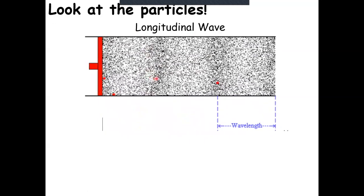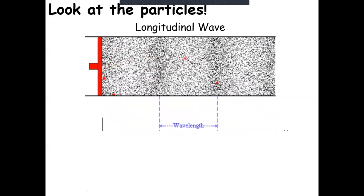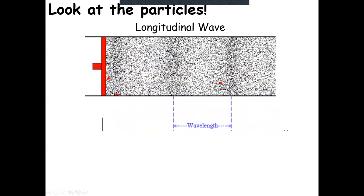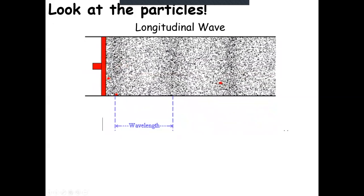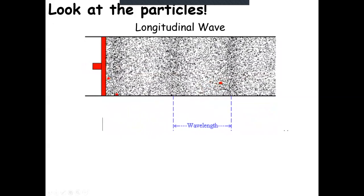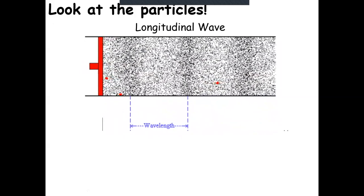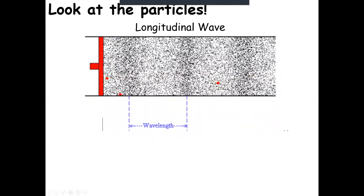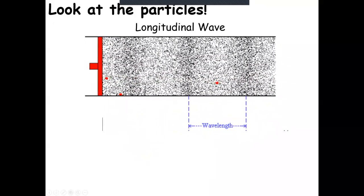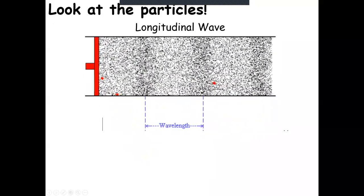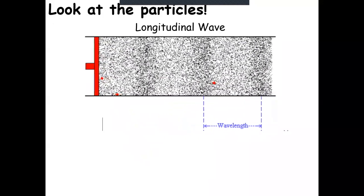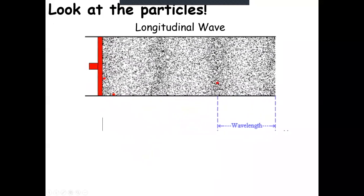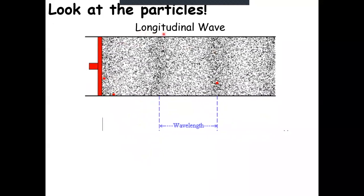When you get those particles being compressed, those compressions travel along the same axis as the energy is traveling — from left to right. The particles themselves also move from left to right, and in this animation the little red dots show that the particle vibrates back and forth in that same direction, along the same axis as the energy is moving. A wave transfers energy without the particles needing to be transferred themselves. The red dots move but return to where they were — that's what makes this a wave. They're moving back and forth along the same axis, which is what makes this a longitudinal wave.